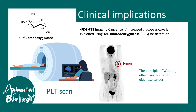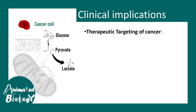Here you can see that a tumor tissue takes up a lot of glucose. Note the blotch visible in the brain region — the brain takes up a lot of glucose normally. But near the breast region you can see a dark area where it is not expected, which is a clear sign of a tumor. The key principle behind this imaging is the Warburg effect.